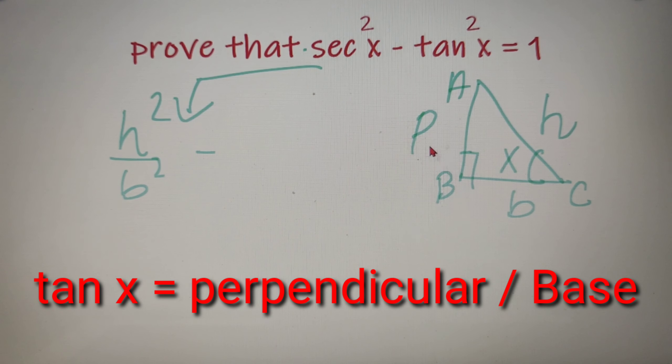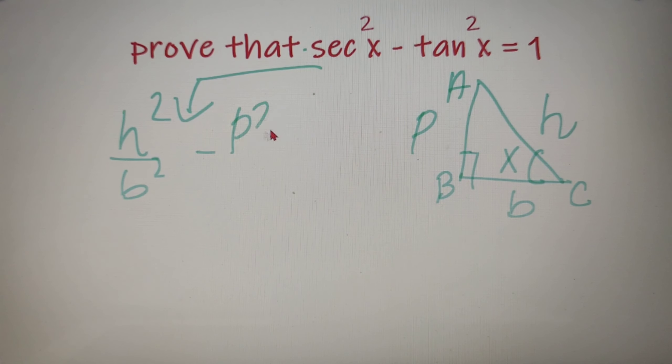So sec²x is equal to h²/b² and same with tan²x. We know that tan x is equal to perpendicular by base. So tan²x is nothing but p²/b².